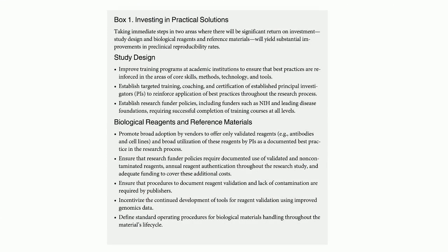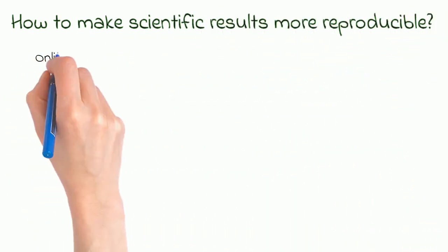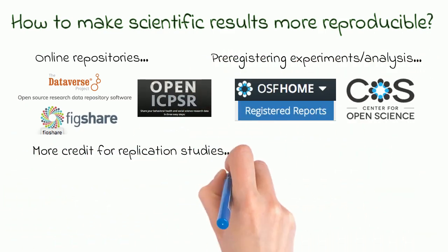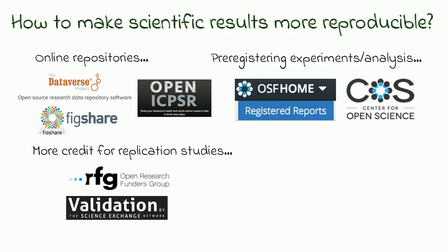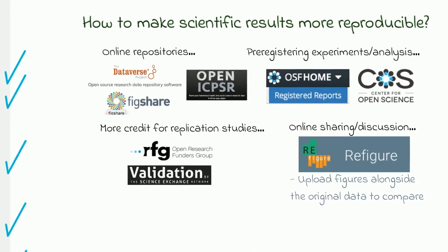I'm going to leave you with a screenshot from the paper to see how the authors propose combating the most prevalent sources of reproducibility errors. In fact, many of these suggestions have already been adopted in regions around the world, depending on the institutions or countries where the research is being performed. There are also a number of other ongoing efforts to make scientific results more reproducible, like making data available in online repositories, pre-registering experiment and analysis plans, giving credit or funding for replication studies, or creating opportunities to share and discuss replication results through websites like refigure.org, where replication experiments can be submitted and collated alongside the original data. So progress is underway.